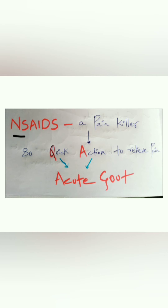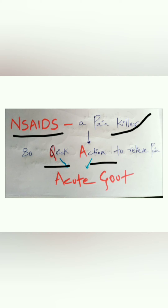How will you know whether NSAIDs are for acute or chronic gout? We all know that NSAIDs are painkillers, and painkillers always have a quick action. Acute means quick and rapid, so quick action — hence we can say that NSAIDs are used in acute gout.